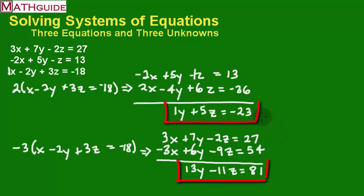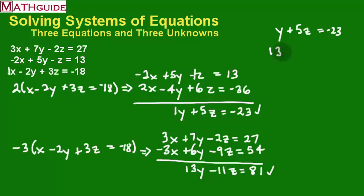So now I've got two equations. They're not just any old two equations, though. You'll notice that I've got Y + 5Z = -23, right? That was that one. And now we've got this one, which is 13Y - 11Z = 81. Now at this point, you should be able to solve this by some method. Substitution, elimination, whatever method you want. I'm going to do it real quickly. And again, I'm going to use elimination.